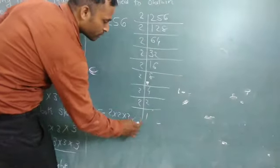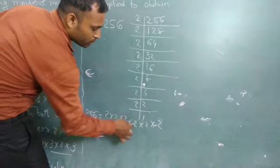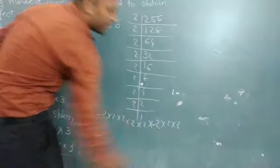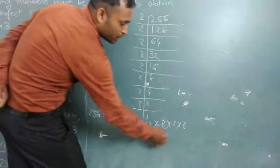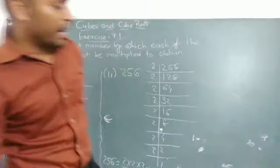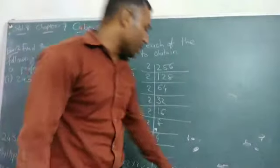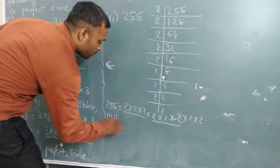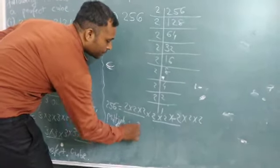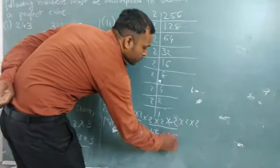Make groups of 3. First group, second group, and third group will not be paired. Because here the number 2 appears 8 times, and we want to make a group of 3. So, 2 is missing in the third group. So we multiply by 2 on both sides.